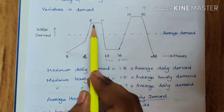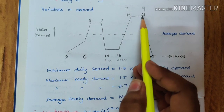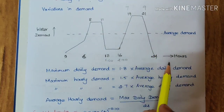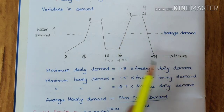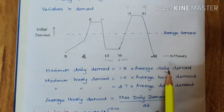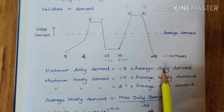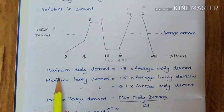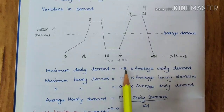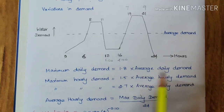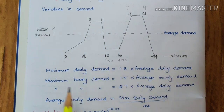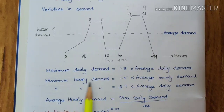After 4 p.m. demand gradually increases again and is maximum from 7 p.m. to 9 p.m. So water demand peaks at 8–11 a.m. and 7–9 p.m., then gradually decreases. Based on this varying daily and hourly demand, formulas are given: maximum daily demand equals 1.8 times the average daily demand, where the average daily demand is taken as the average of all usage from the graph.